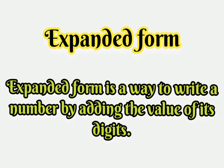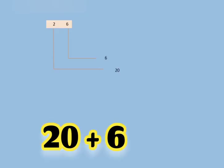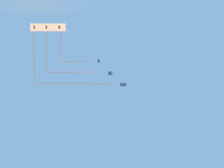Hello students, how are you all? Welcome back to my channel. Today we will be learning how you can solve expanded form questions. 6 is on the 1's place value and 2 is on the 10's place value, so we can say that 20 plus 6 is the expanded form of 26.